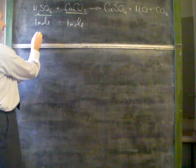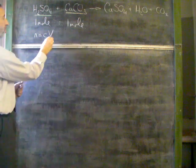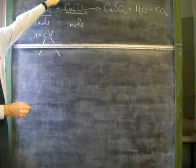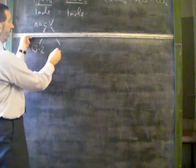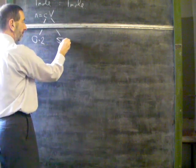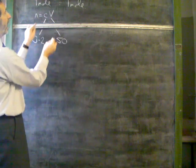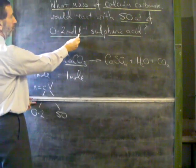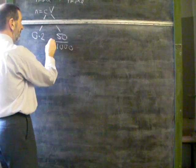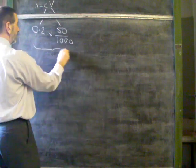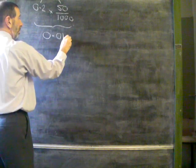We can use the equation n equals cv if we're given the concentration of the acid and the volume of the acid. Looking at the equation, the concentration is 0.2 moles per liter. The volume is 50 cubic centimeters. But the volume has to be expressed in liters. After all, it does say 0.2 moles per liter. So this is 50 over a thousand. 0.2 times 50 over a thousand comes to 0.01 of a mole.